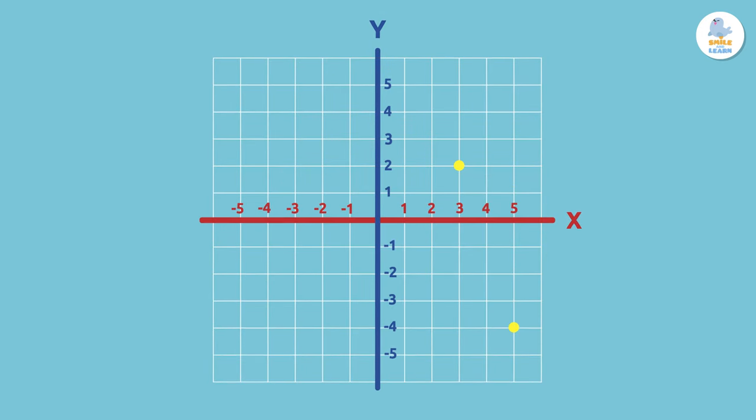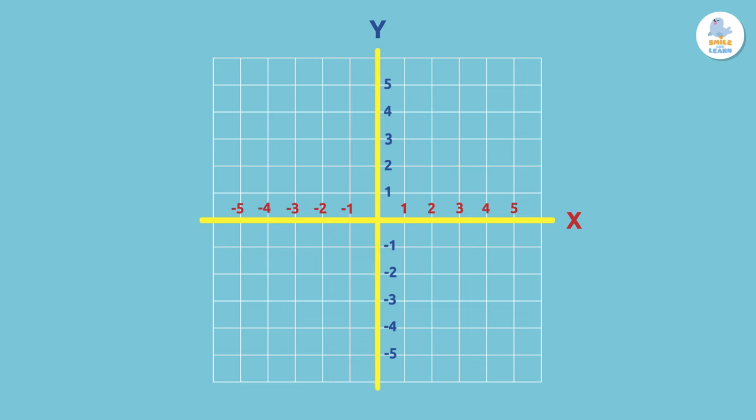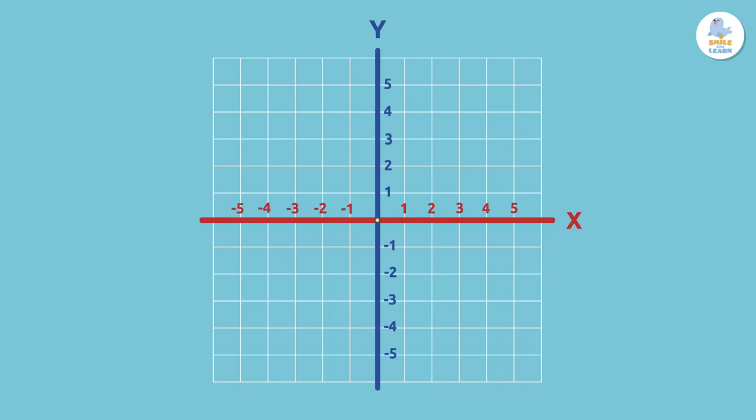The Cartesian coordinate system is formed by two straight lines that intersect at a point called the origin. These lines divide the plane into four quadrants.